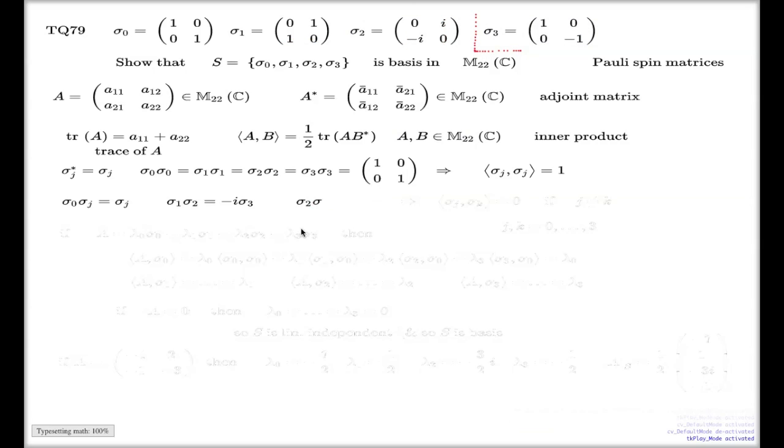Another verification: if you multiply sigma 2 and sigma 3, it's negative i times sigma 1. This row by this column is i, this row by this column is i again, the other two combinations are 0.